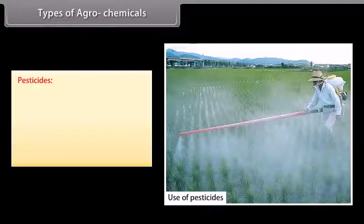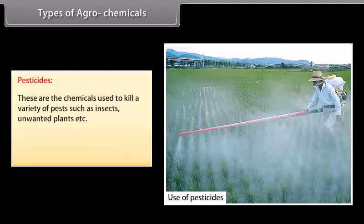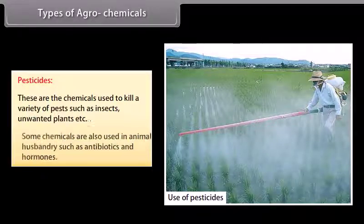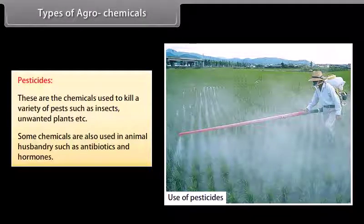Pesticides are chemicals used to kill a variety of pests such as insects, unwanted plants, etc. Some chemicals are also used in animal husbandry, such as antibiotics and hormones.